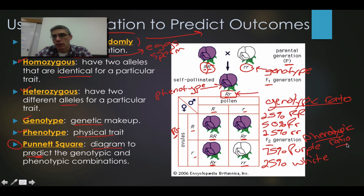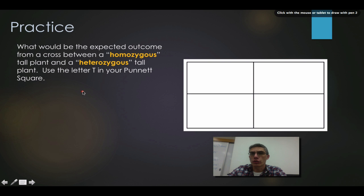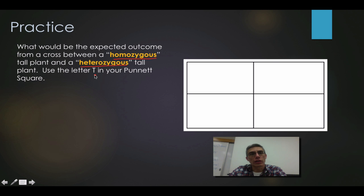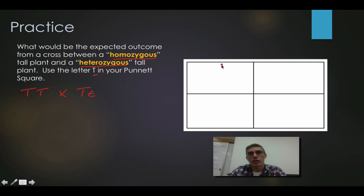You guys will work with these numbers again in class and get lots of practice doing these Punnett squares and working with these ratios. Before we finish up this screencast, I want to make sure you guys are really solid on Punnett squares, so I decided to put in a cross to work through one more time. Here it says: what would be the expected outcome from a cross between a homozygous tall plant and a heterozygous tall plant? Use the letter T. The first thing we want to do is set up our cross correctly.